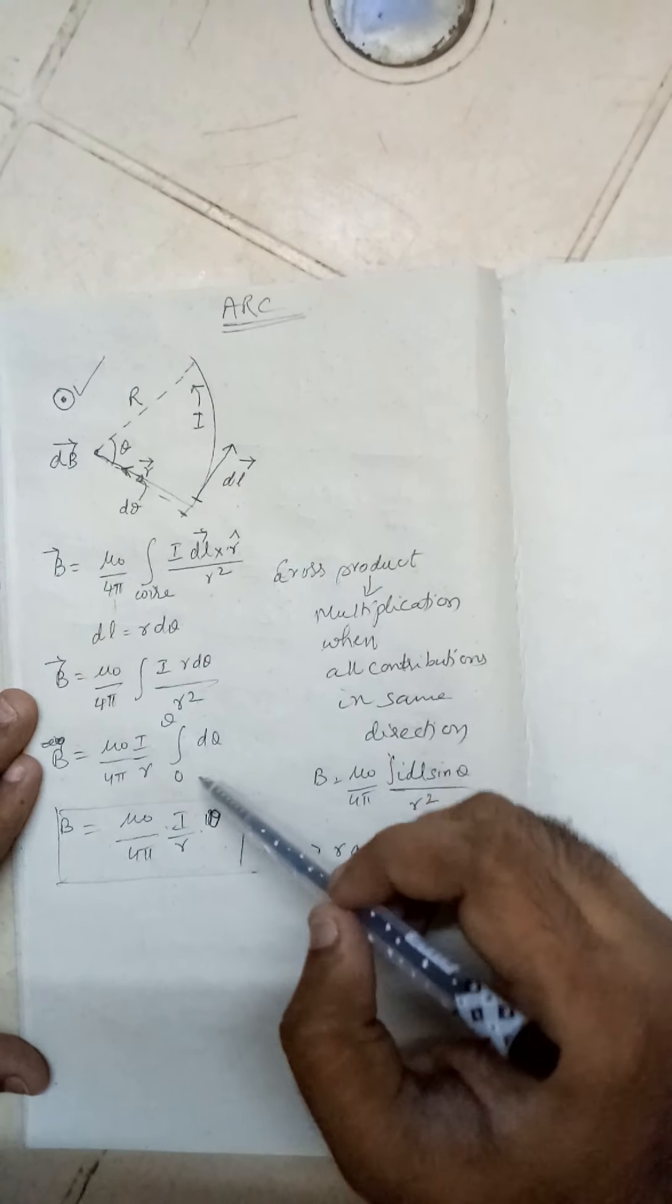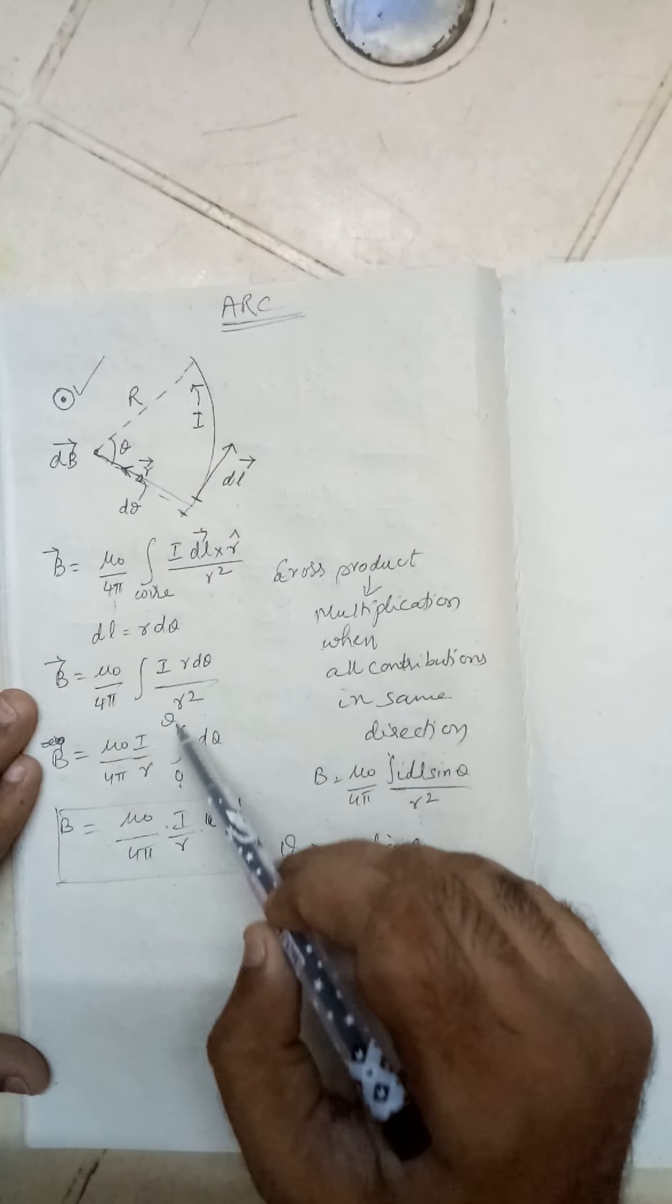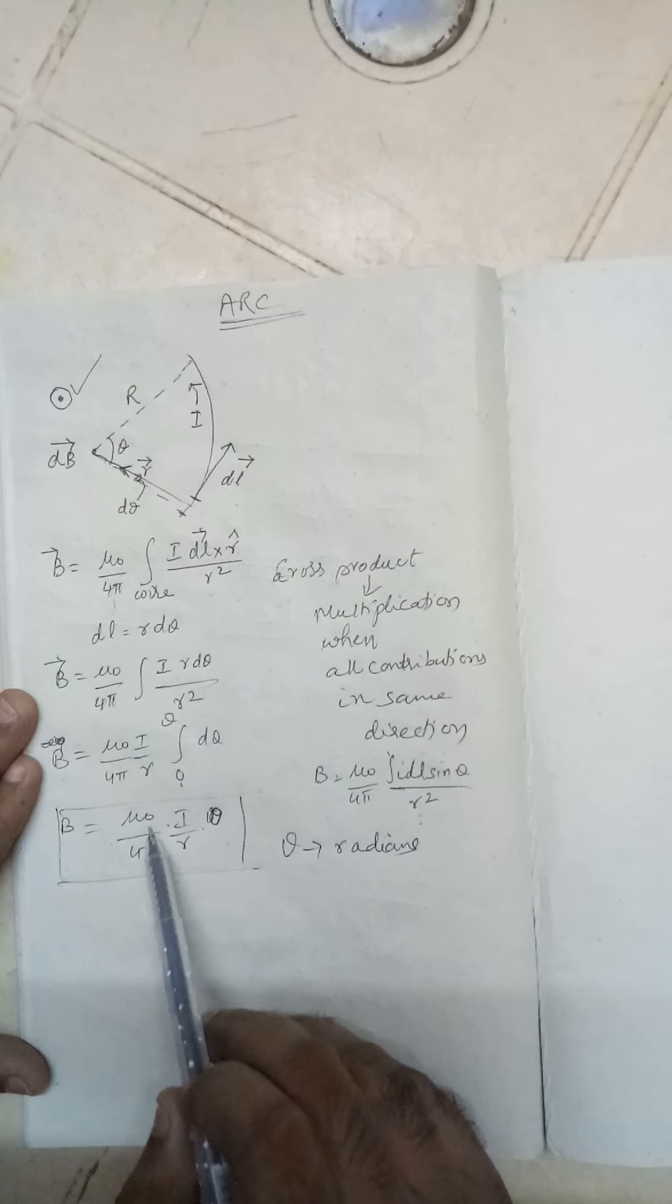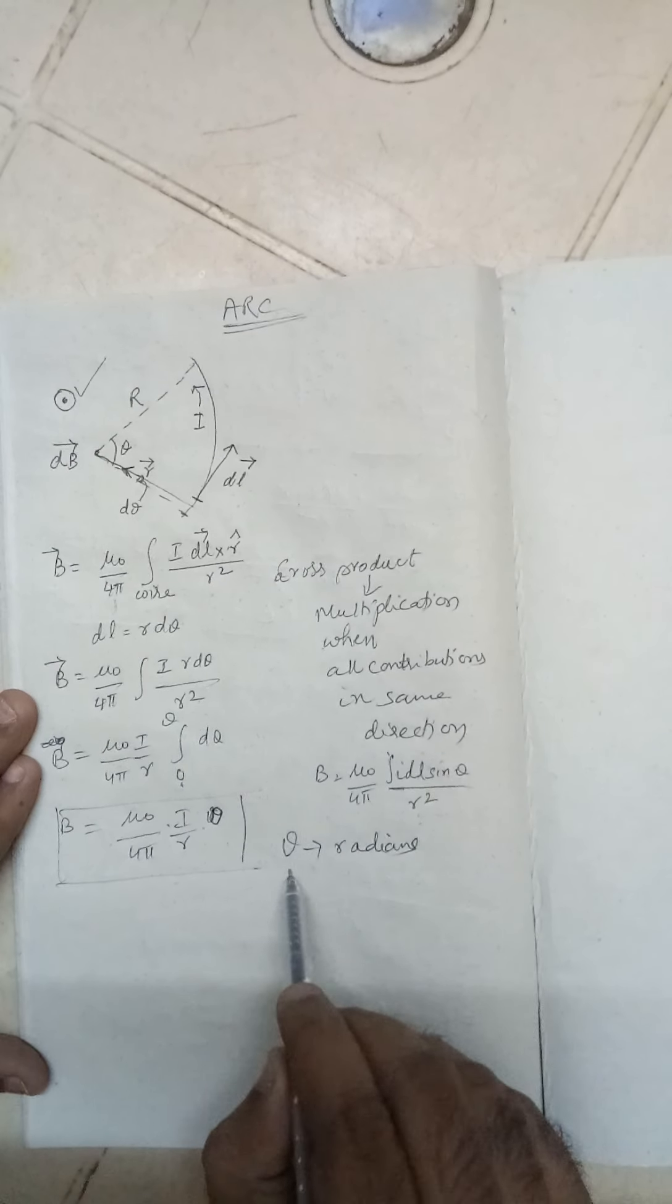So B is equal to mu_0 by 4 pi, i theta by r. Here theta must be in radians.